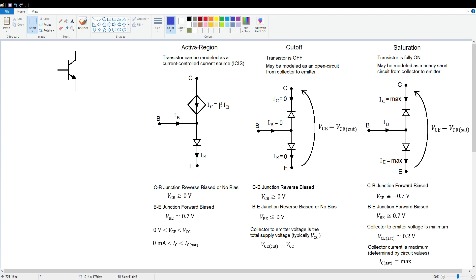Now we've got three regions of operation that are important to us: the active region, cutoff, and saturation. The previous circuit we assumed was in the active region, and in that region the transistor is modeled as a current-controlled current source. The collector current is controlled by the base current.